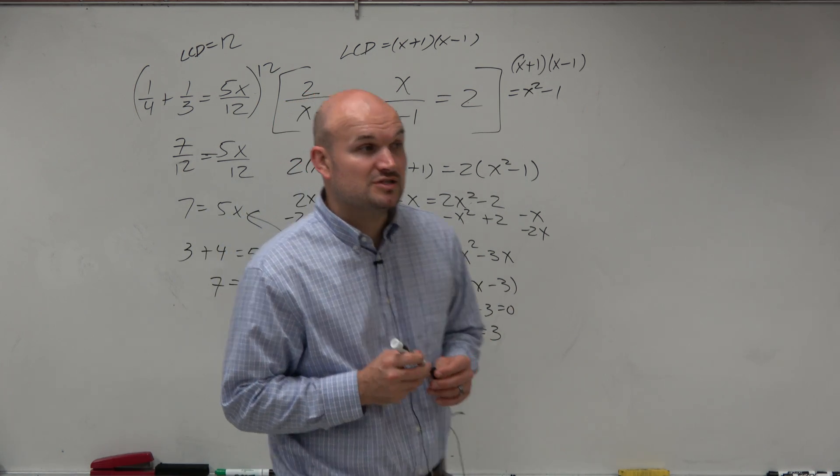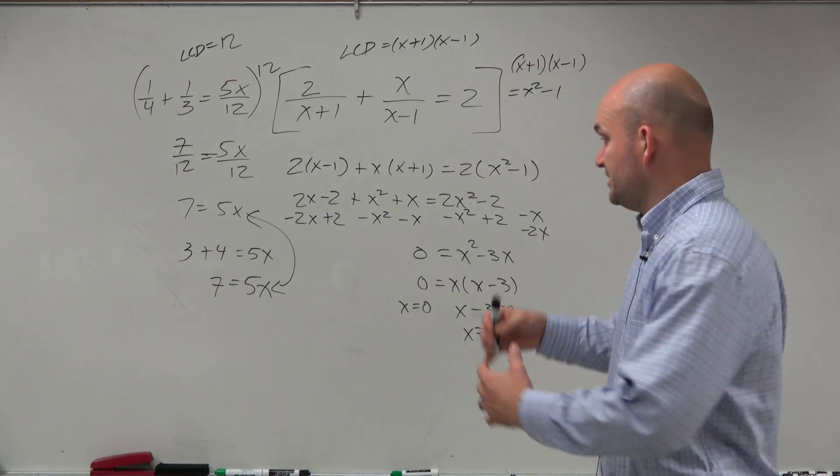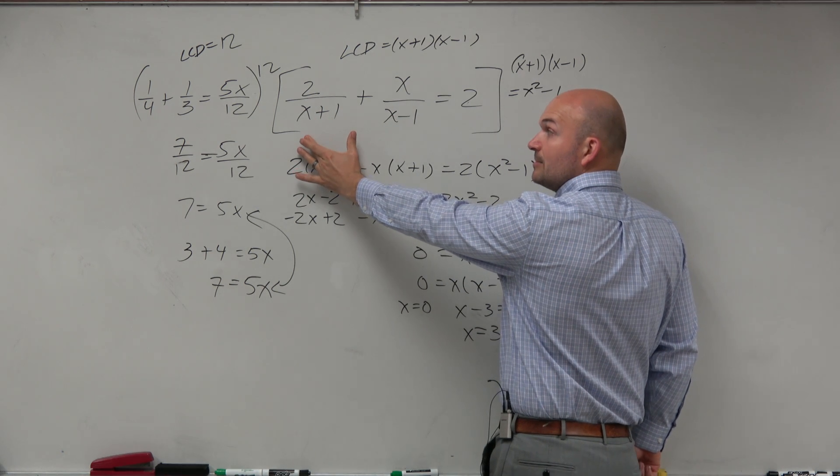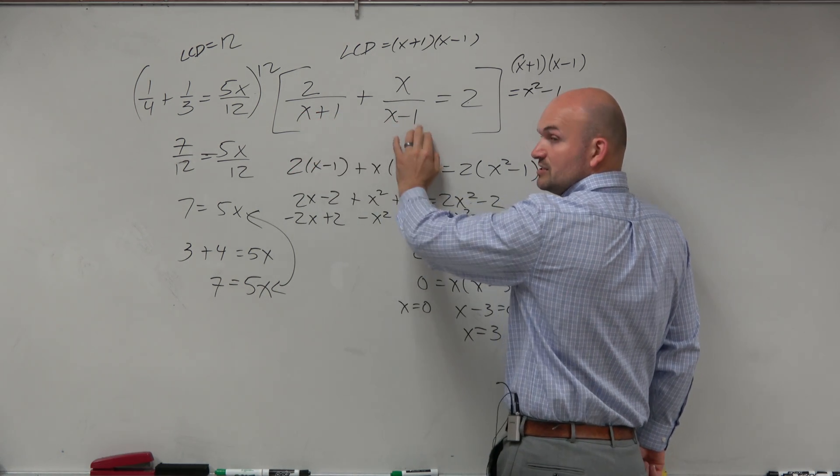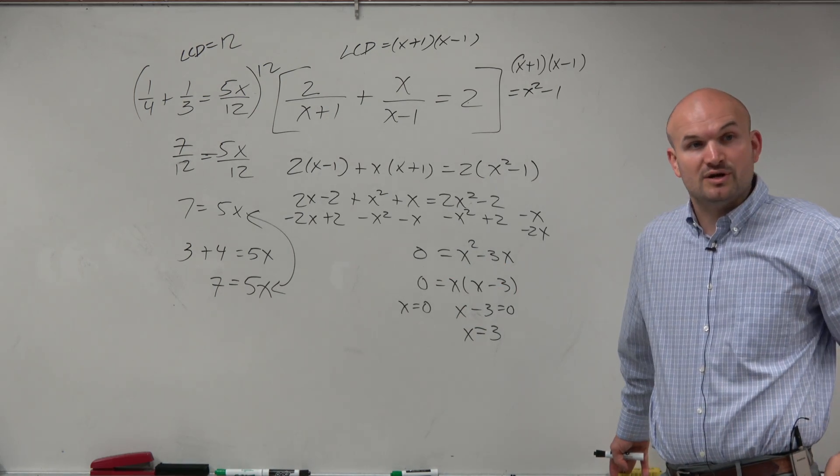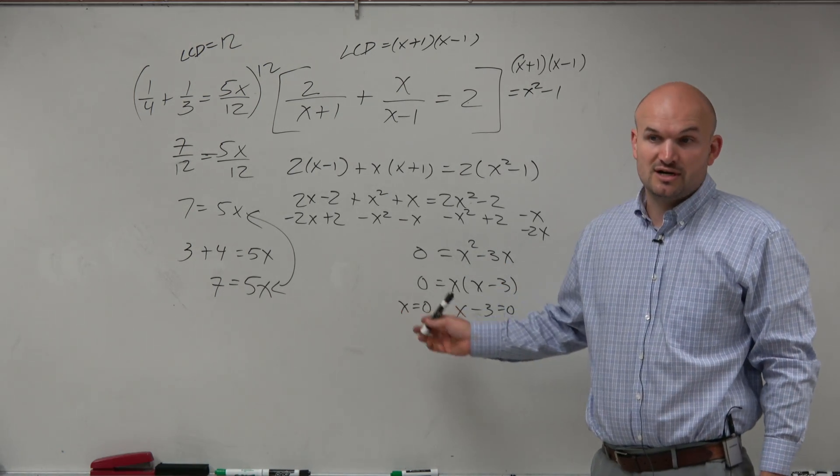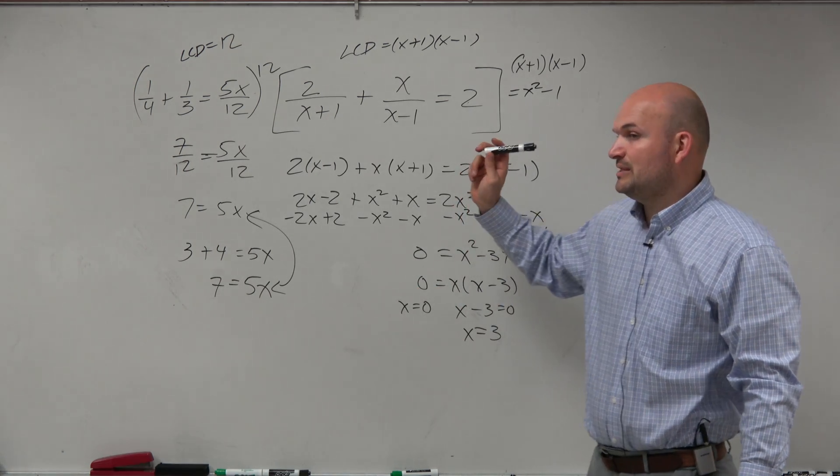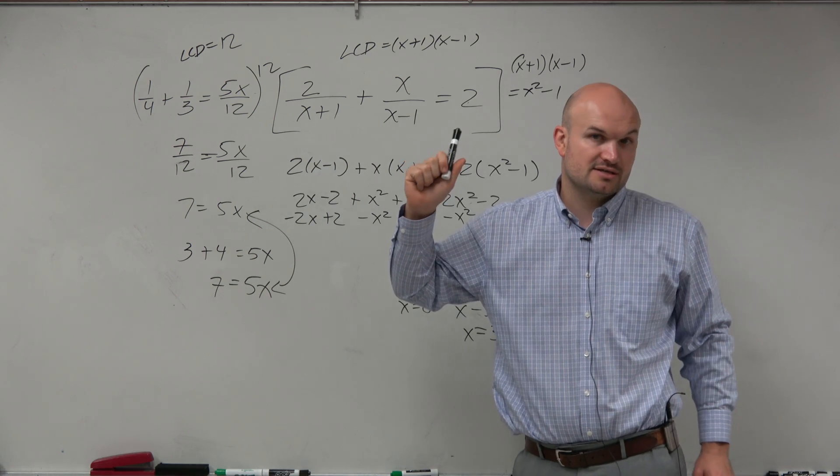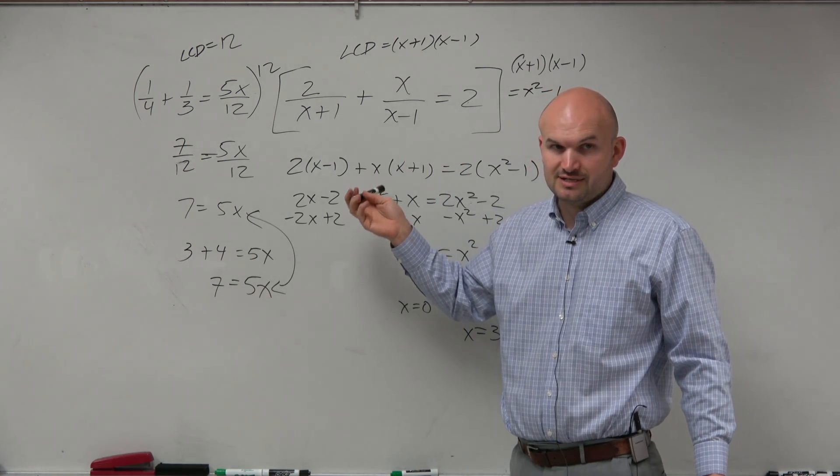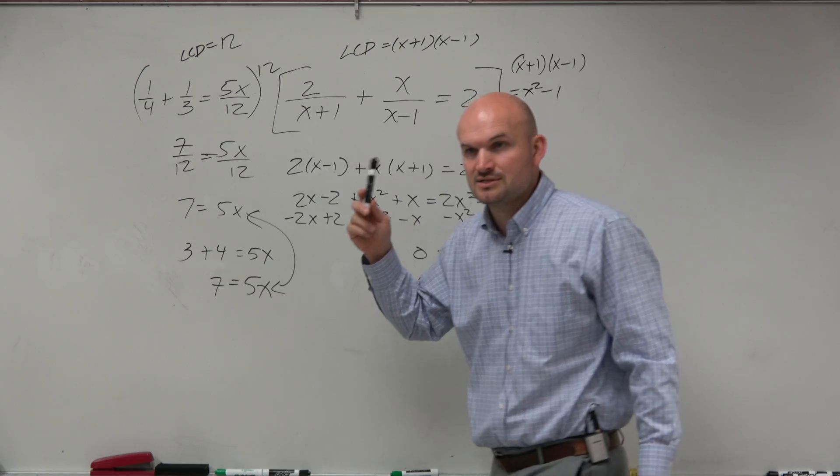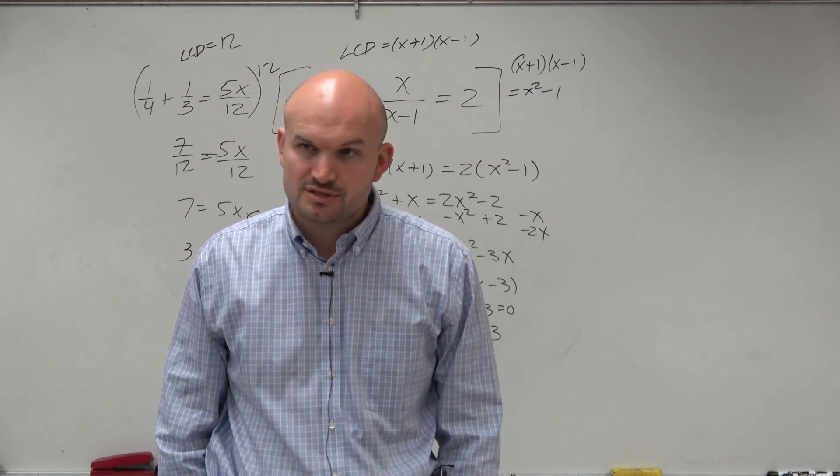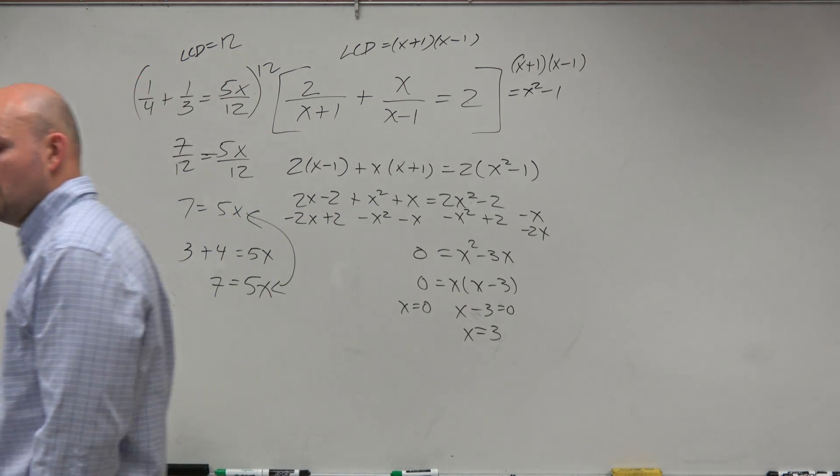Now, remember, for rational expressions, we have to go back and check to make sure that they work. So we take our two solutions, 0 and 3, and we plug them back to our equation and make sure they don't make our denominator equal to 0. You notice that the only numbers that make our answer 0 are negative 1 and 1. So these two solutions are not extraneous. So those are your two solutions. And again, remember, don't give me the solutions are negative 1 and 1 saying, oh, those are your extraneous. No, they are extraneous, but they're not solutions. So don't add them as the solutions. Yes, they are undefined values, but they're not extraneous solutions because they're not even solutions.